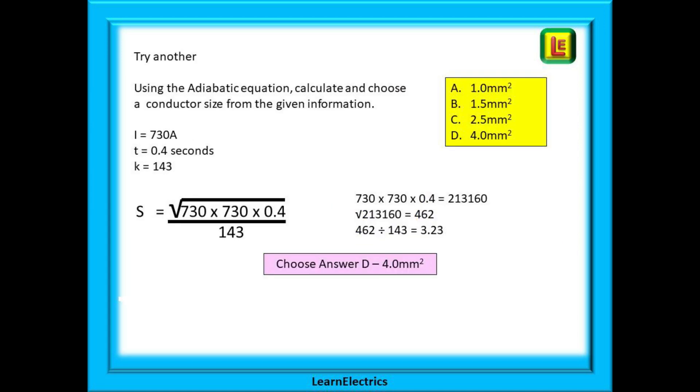We can try another. This time we have different numbers to enter. Follow the same logical method. Break it down into easy steps and we should have a minimum size of 22.36 millimeters. From the four choices offered, 4 millimeter cable is the one to select.